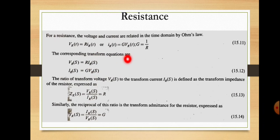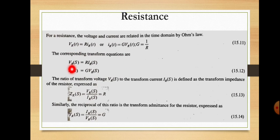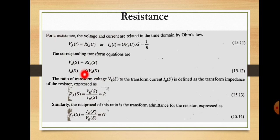We can convert each of the voltages and currents into the Laplace domain or s-domain. Taking the Laplace transform of each quantity, the transform equations become: Vr(s) = R × ir(s). Similarly, ir(s) = (1/R) × Vr(s) = G × Vr(s). Impedance is defined as the ratio of voltage to current.